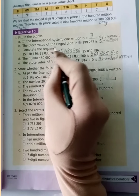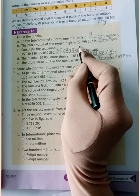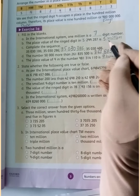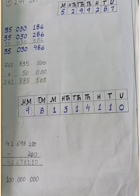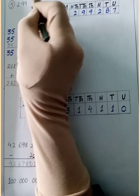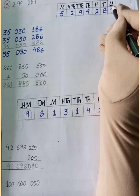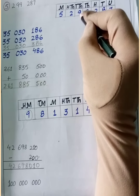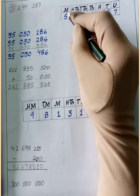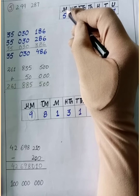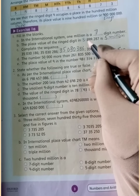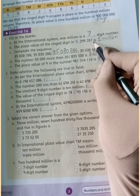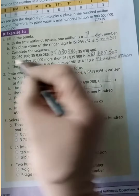Part B: the place value of the ring digit in 5,299,287 is dash. Students, put this value in the place value chart and count with me: unit, ten, hundred, thousand, ten thousand, hundred thousand, and million. Five million. Five million, two hundred and ninety-nine thousand, two hundred and eighty-seven — the answer is five million.